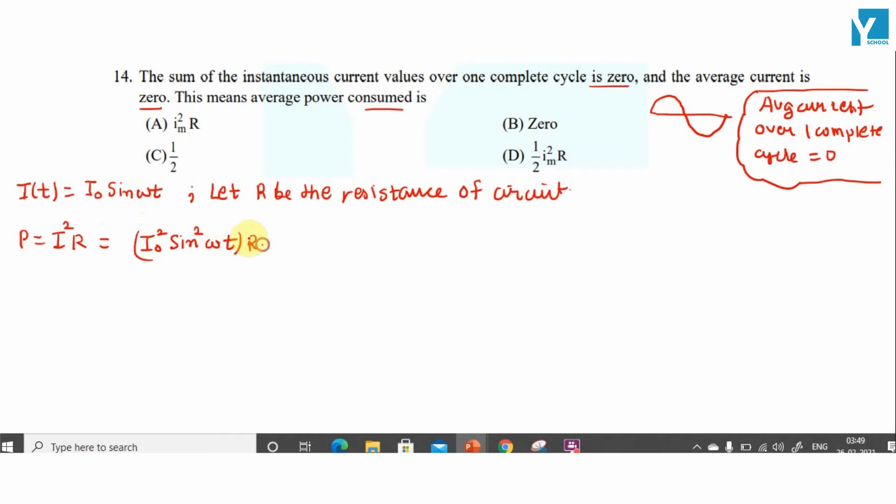So average power over one complete cycle is equal to I₀² sin²(ωt)... is equal to I₀²R integration of sin²(ωt).